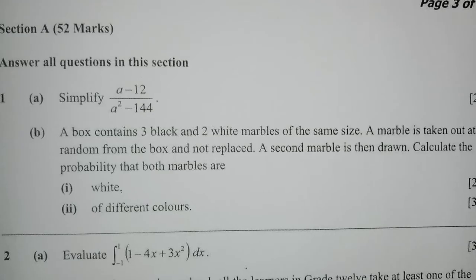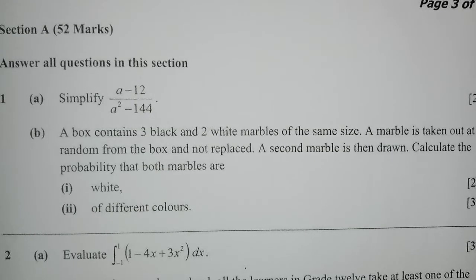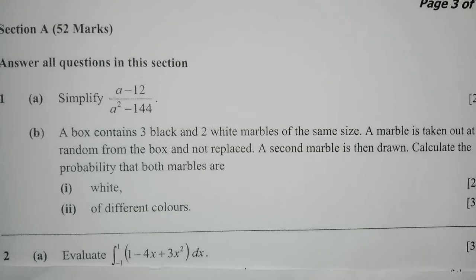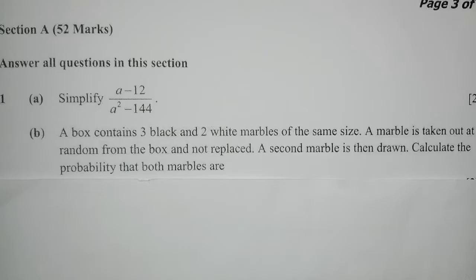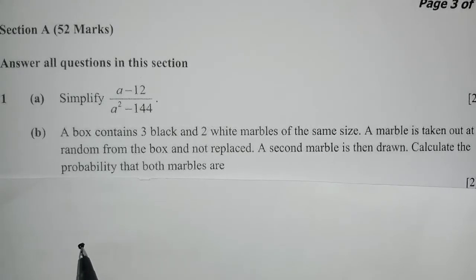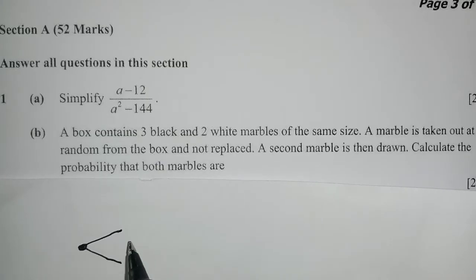Question B: a box contains three black and two white marbles of the same size. A marble is taken out at random from the box and not replaced. A second marble is then drawn. Calculate the probability that both marbles are white, and two of different colors. To answer these questions, we need to use a tree diagram. A tree diagram will be easier to work with.